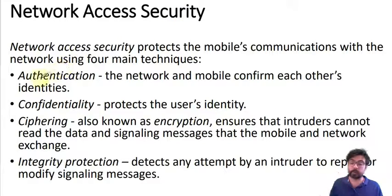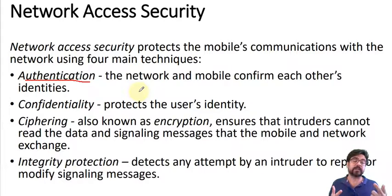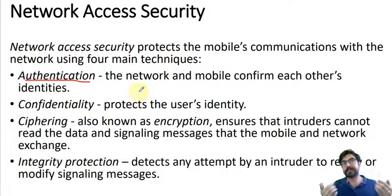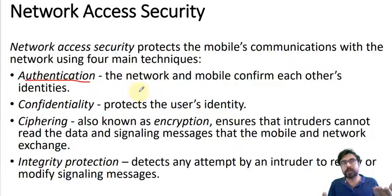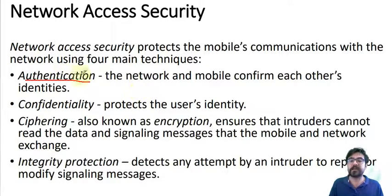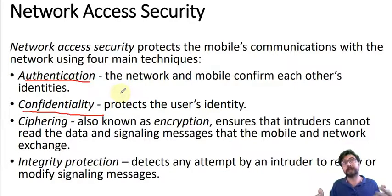Network access security consists of four parts. The first is authentication. Unlike GSM, where only the UE or SIM card authenticated itself to the network, here it is a two-way authentication. The UE should authenticate itself to the network, saying 'I'm the correct user,' and the network should also say 'I am the correct network, I'm not a fake network, you can trust me and send your data to me.'